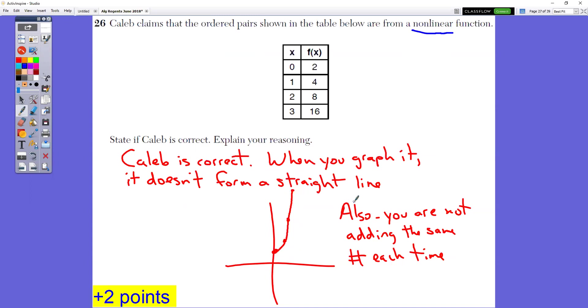A different way that you could have stated that he is correct is if you're not adding the same number each time. Notice that to get from 0 to 1 to 2 to 3, we're adding by 2, adding by 4, adding by 8. We're not adding by the same number each time. If we were adding by the same number each time, it would form a line.